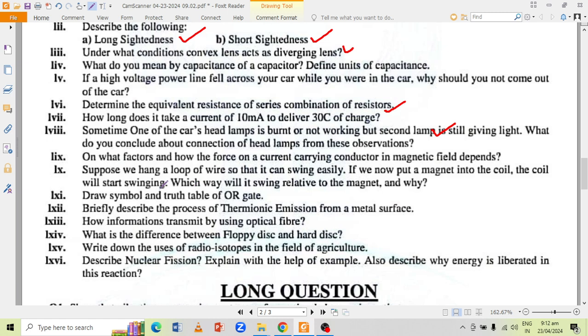Suppose we hang a loop of wire so that it can swing easily. If we now put a magnet into the coil, the coil will start swinging. Which way will it swing relative to the magnet? Draw a symbol and truth table of OR gate. Briefly describe the process of thermionic emission from a metal surface. How information transmit by using optical fiber?